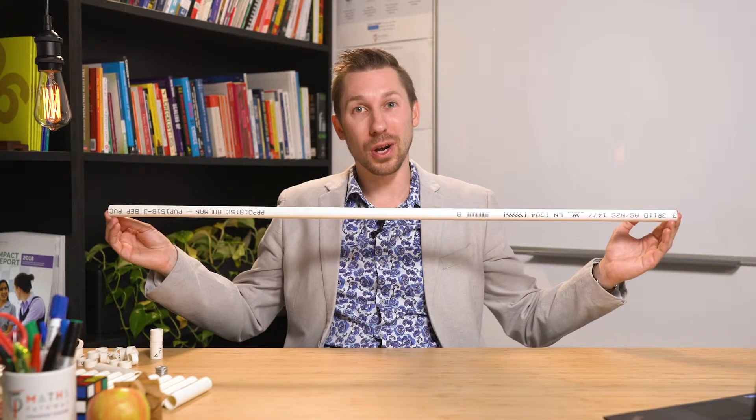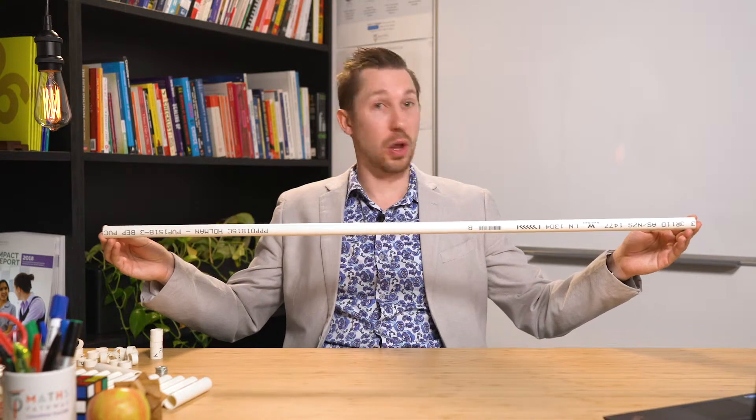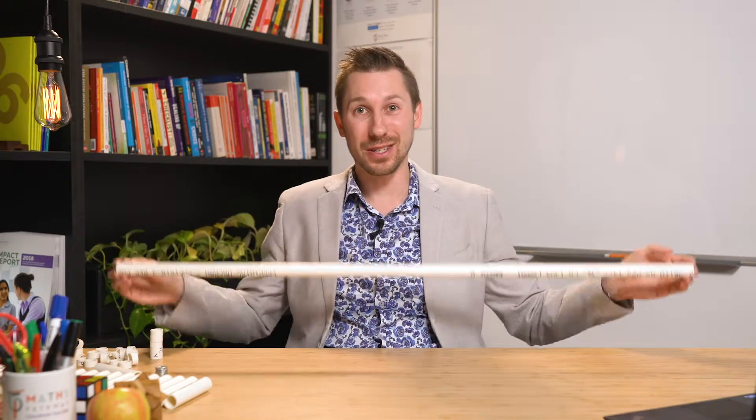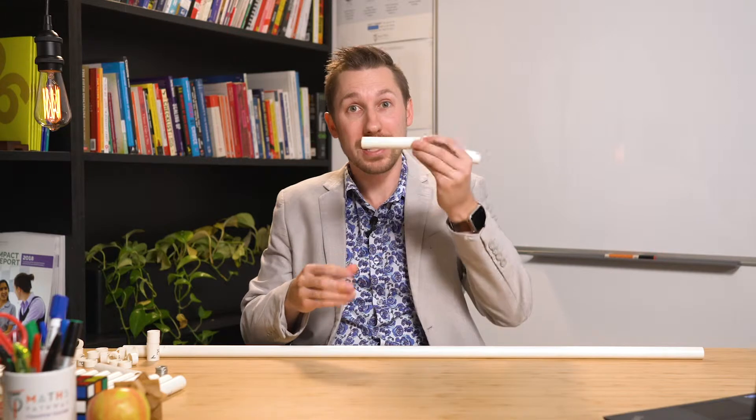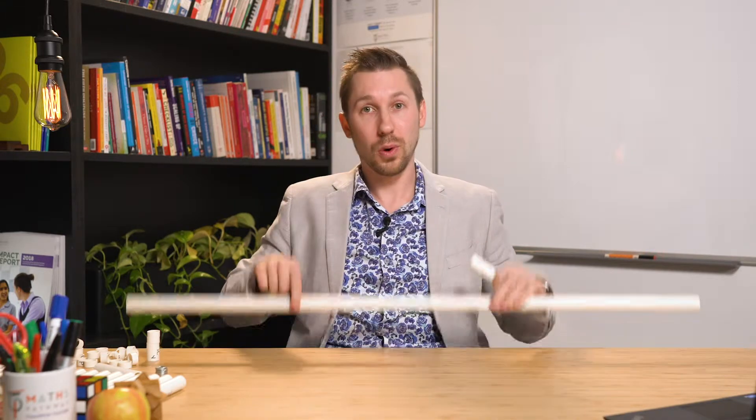Now we have here what I call a one. That is a long piece of PVC pipe that I've just bought at Bunnings. Now, if I think about that, this one can be broken up into tenths and therefore ten of these guys will equal one of these.